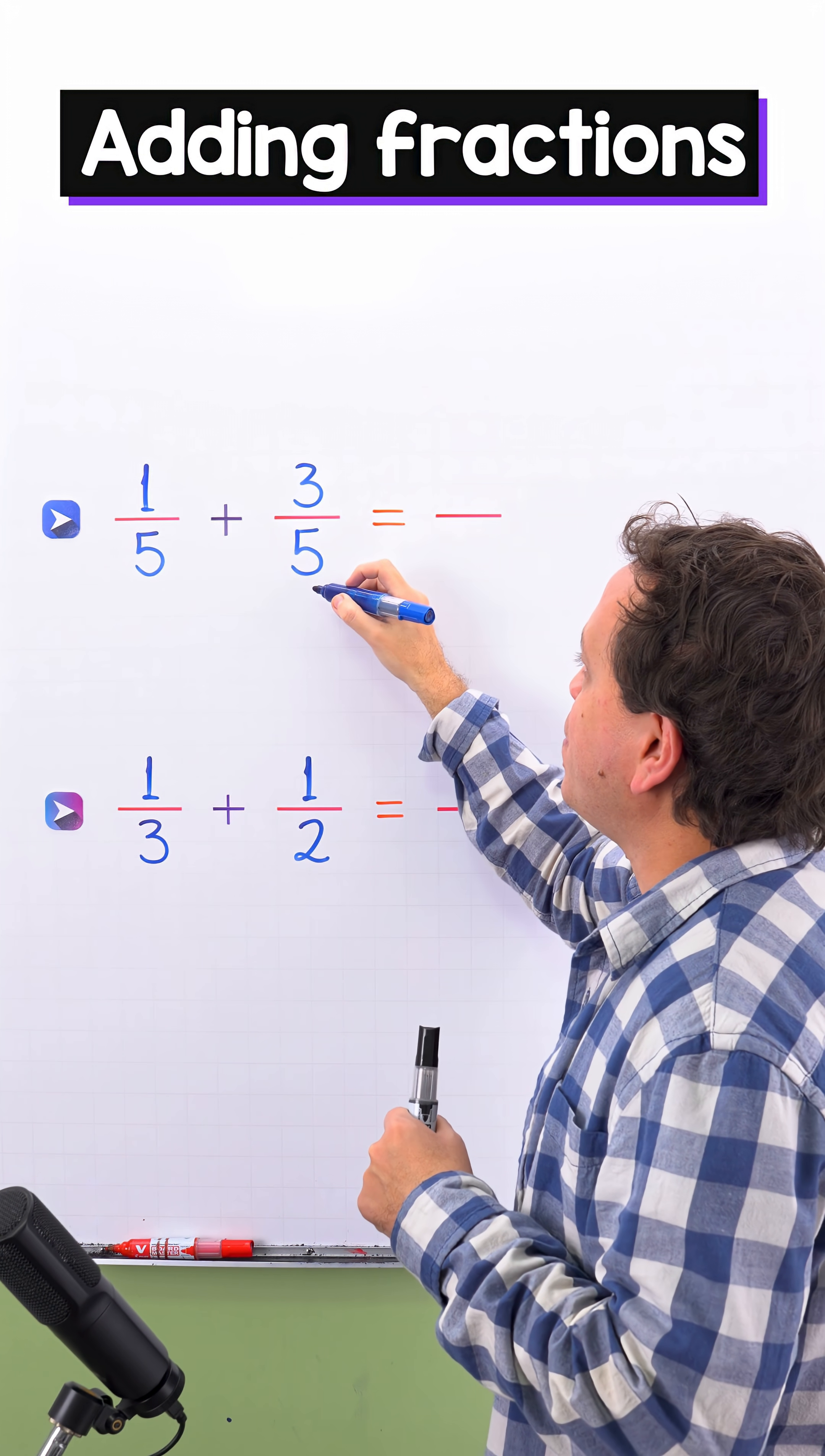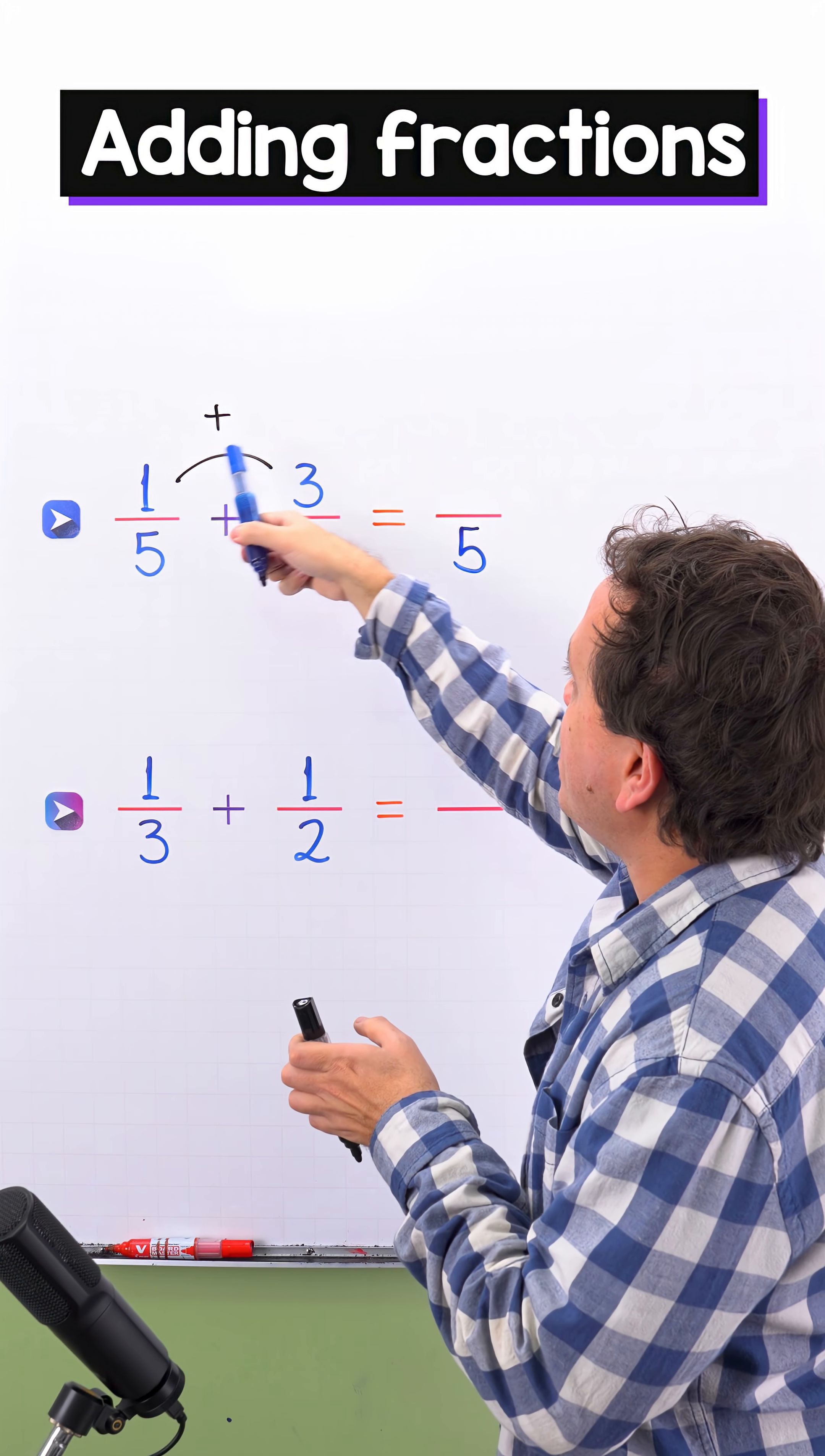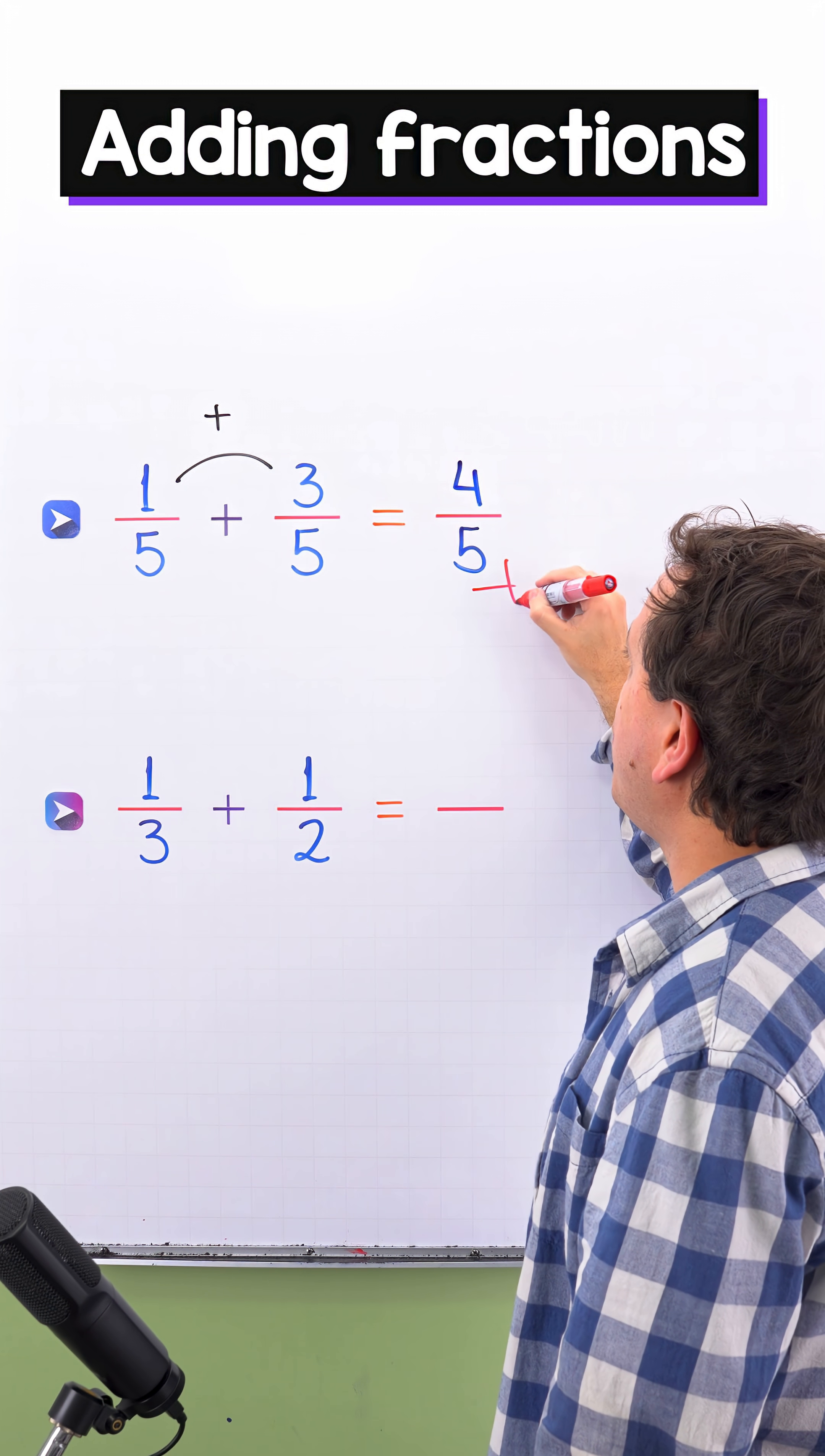We have five on the left, five on the right, we can put five on this side. And finally, we just need to add the numerators, and one plus three give us four. In that way, one-fifth plus three-fifths give us four-fifths.